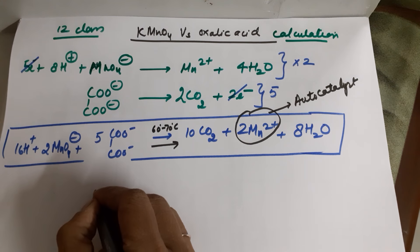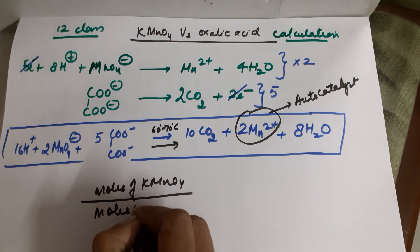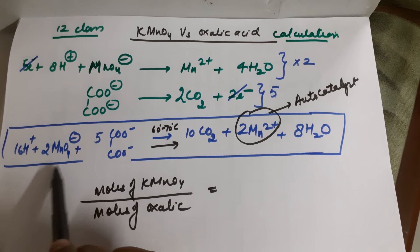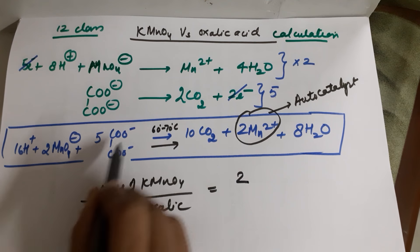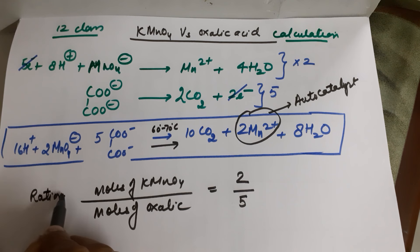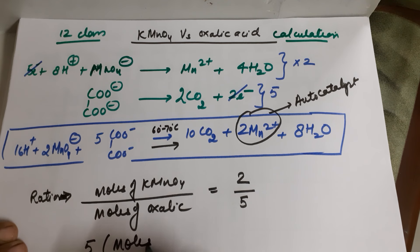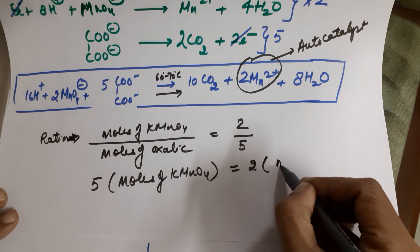Coming to the formula used: the formula is moles of KMnO4 upon moles of oxalic acid. From the equation, how many moles of oxalic acid? 5 moles. How many moles of KMnO4? 2 moles. So moles of KMnO4 equals 2 and moles of oxalic acid equals 5. The ratio between the moles of the two reacting species defines the formula, so 5 times moles of KMnO4 equals 2 times moles of oxalic acid.